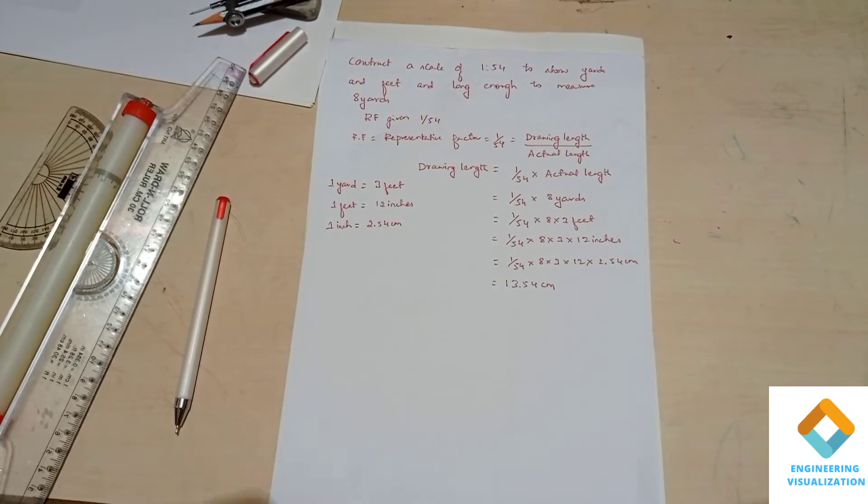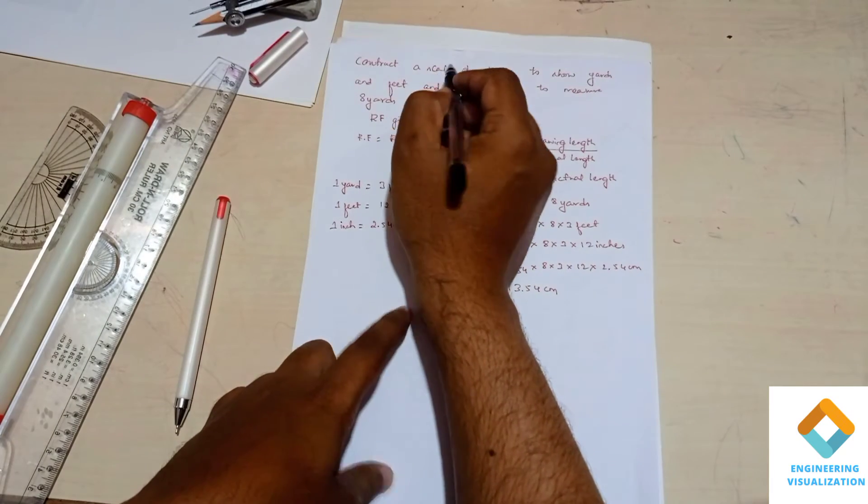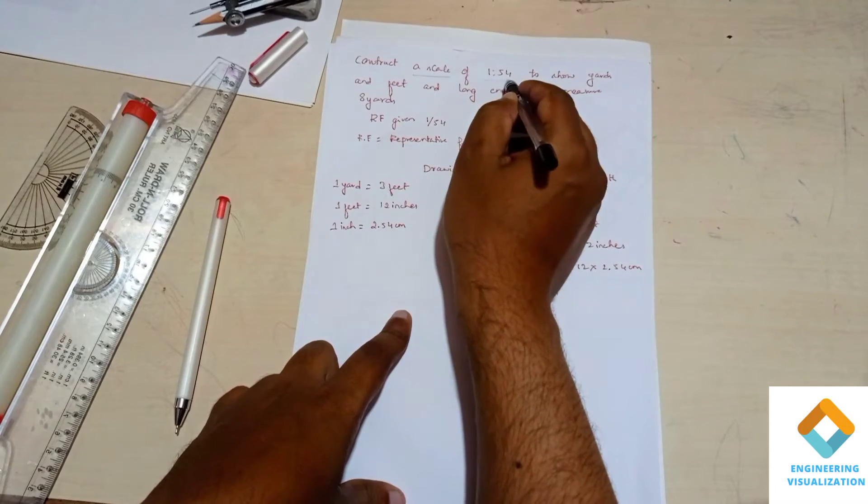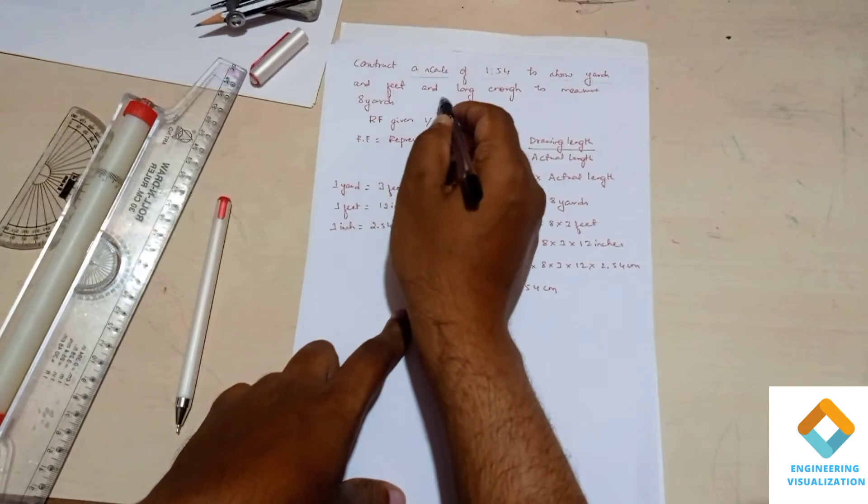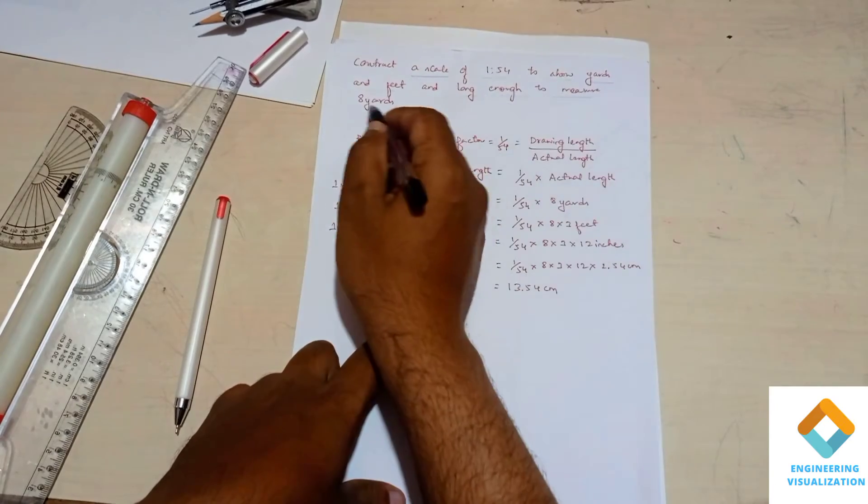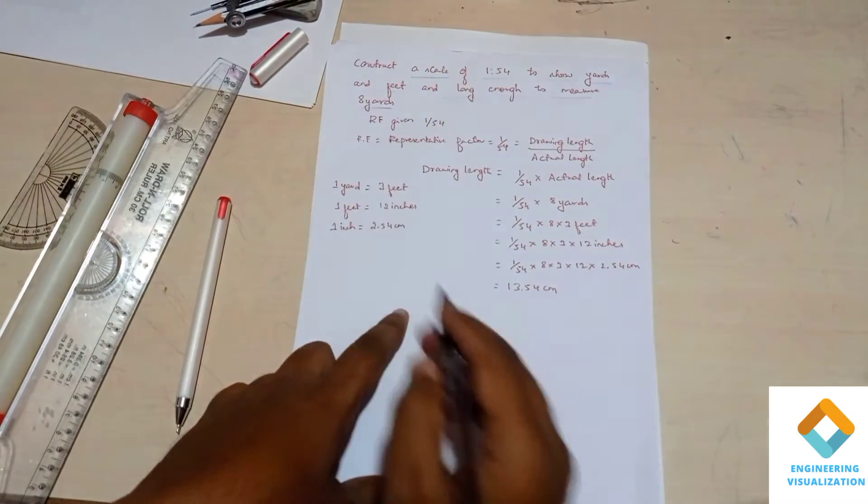Welcome you all for Engineering Visualization Channel. Today we are going to construct a scale of RF 1:54 to show yards and feet, and it should be long enough to measure 8 yards.